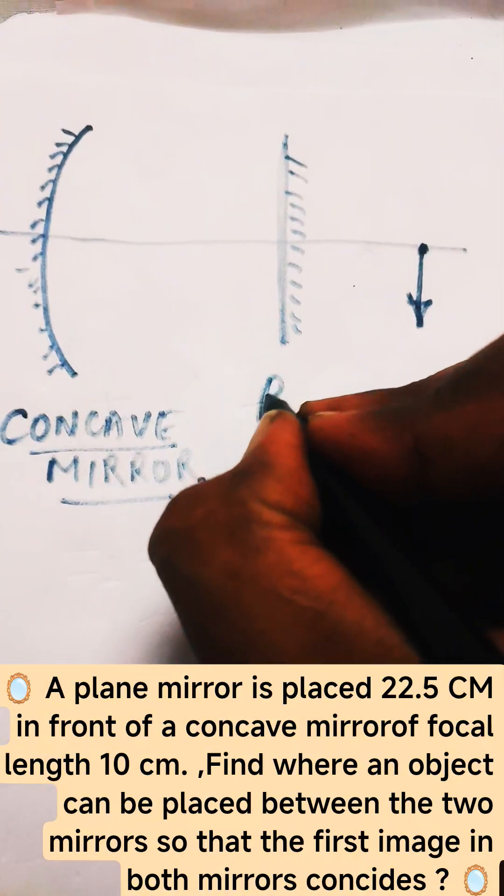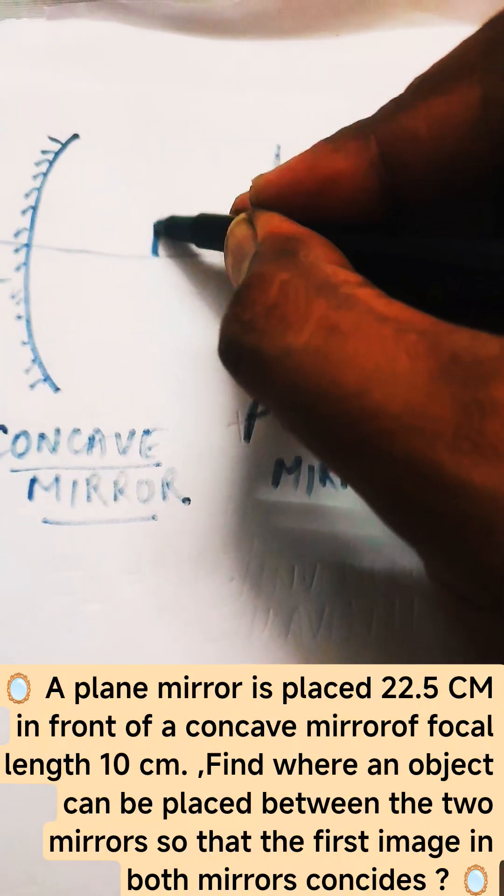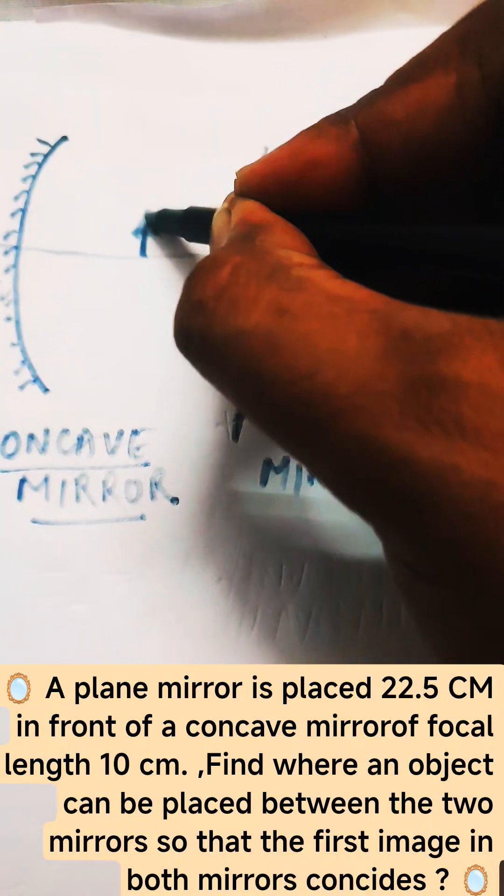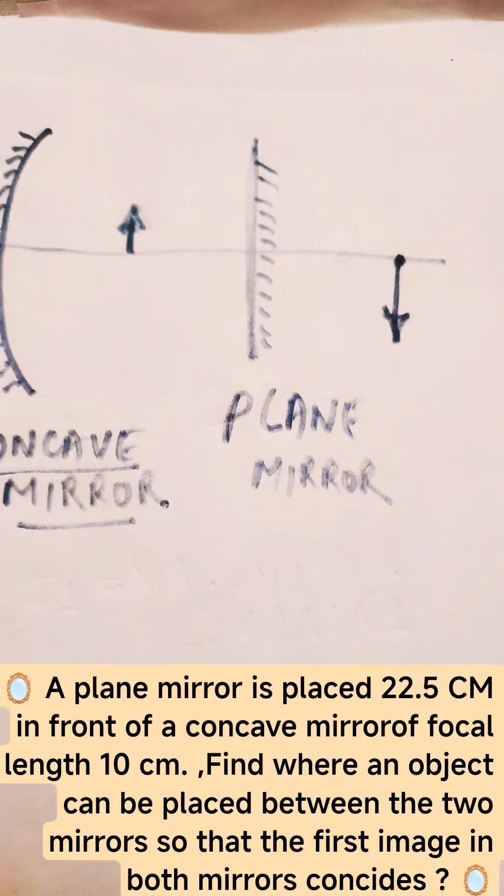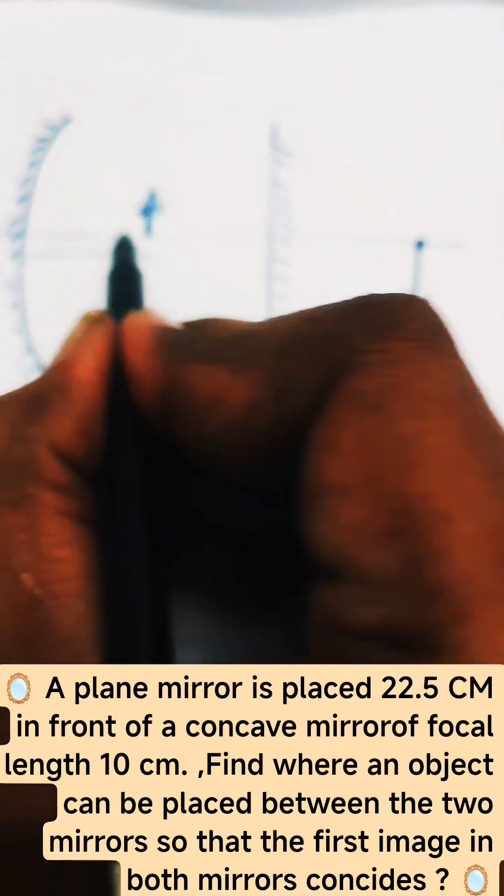the silvered surface of the plane mirror, and the object is placed. We need to find at what distance the object should be placed - what is the object distance, this u.